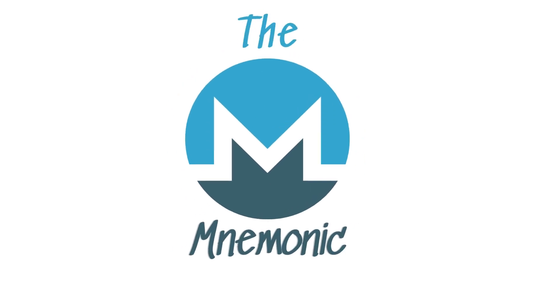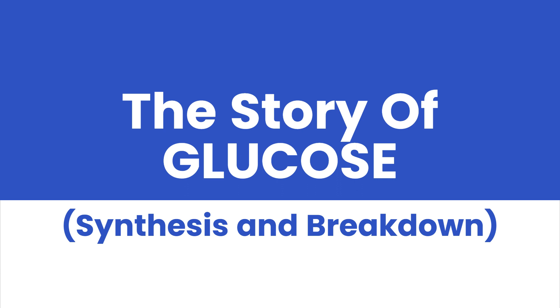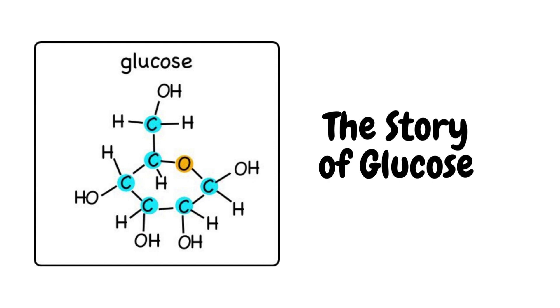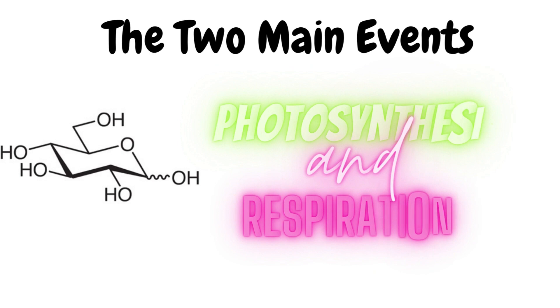Hello friends, this is the mnemonic. Today, we are going to start a lecture series. This is the story of glucose from its synthesis up to the point where it's broken down. In order to talk about the story of glucose, we have to talk about the two main events that took place in the journey of the glucose — two of the most fascinating and complicated processes that happen in the biological world.